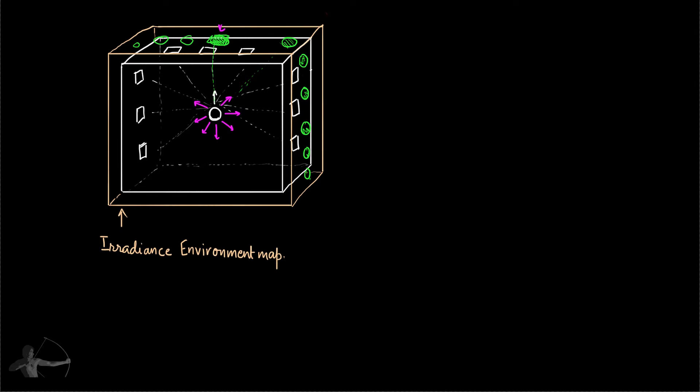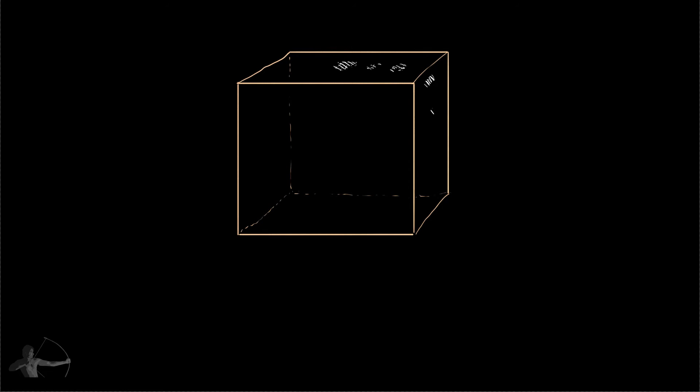All of this calculation is pre-computed — we do not perform it during runtime. We pre-compute the diffuse calculations and store the result in the irradiance environment map, which is then used to calculate the final diffuse reflection in the scene during rendering.